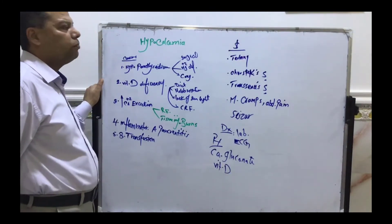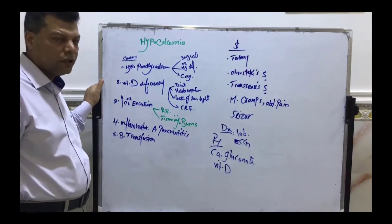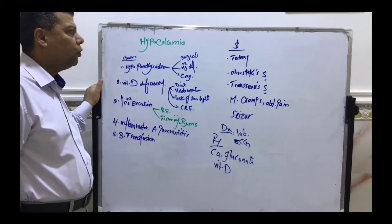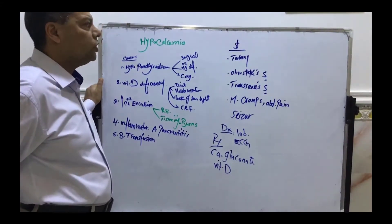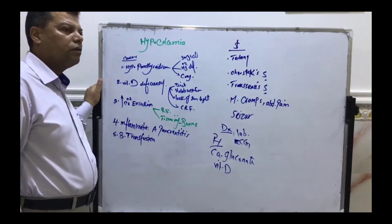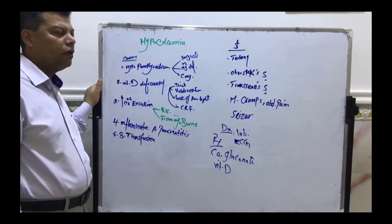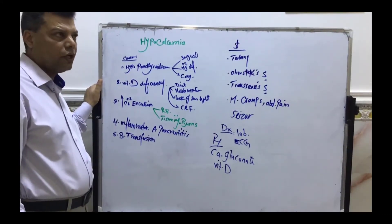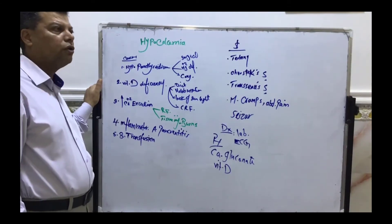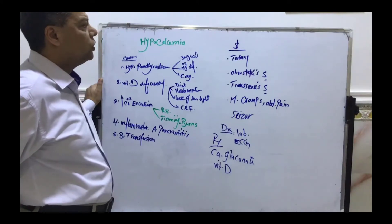Second, special signs may occur according to the severity of hypocalcemia, like Chvostek's sign. This sign occurs by tapping on the course of the facial nerve, leading to contraction of the facial muscle. This is called Chvostek's sign.